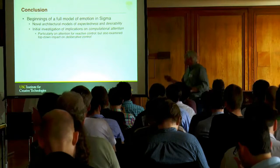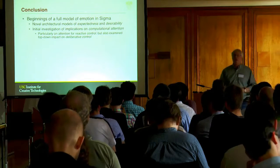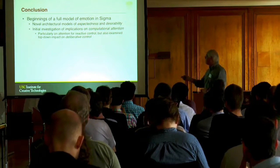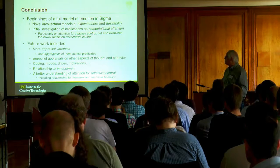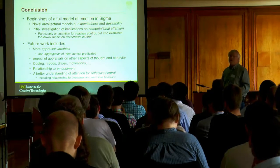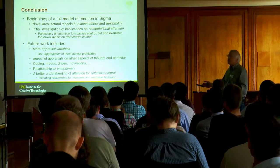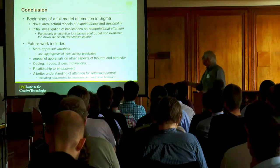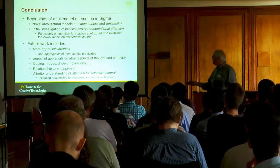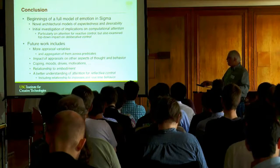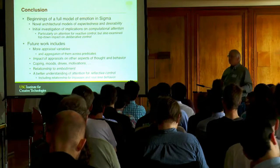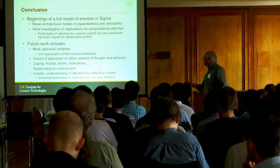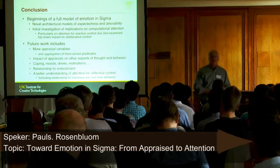So conclusion. This is the beginnings of a full model of emotion, it's a long way from a full model. But it does talk about two appraisals and their impact on computational attention. A fair amount of reactive, a little bit on deliberative. A lot more work to get to that full model: more appraisal variables and aggregation across them to get global emotional variables, more of the kinds of impacts on thought and behavior, coping behaviors, moods, drives, motivations, the relationship to embodiment and the variables driven by the system itself, and aspects of reflective control. Thank you.